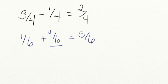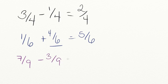Let's try another problem. If I have seven ninths and I subtract three ninths, how many ninths do I have left? We know that our denominator is going to stay the same — we're going to keep ninths — and seven minus three equals four. That wasn't so hard.